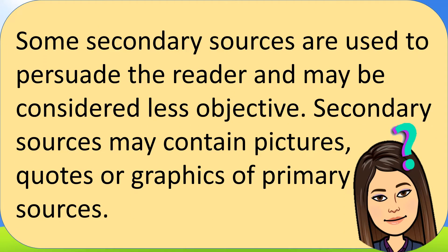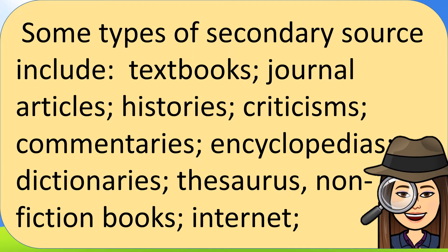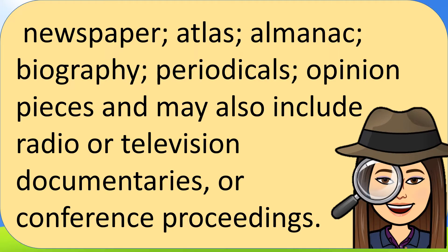Some secondary sources are used to persuade the reader and may be considered less objective. Secondary sources may contain pictures, quotes, or graphics of primary sources. Some types of secondary sources include textbooks, journal articles, histories, criticisms, commentaries, encyclopedias, dictionaries, thesaurus, non-fiction books, internet, newspapers, atlas, almanac, biography, periodicals, opinion pieces, and may also include radio or television documentaries or conference proceedings.